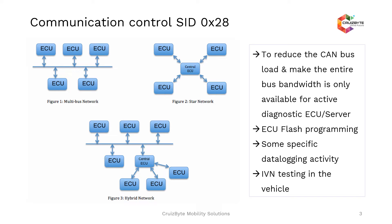Or if you are performing in-vehicle networking testing and want to observe a particular ECU or specific issues in the network, this could be one way of enabling or disabling communication of a particular node — for a full communication stop or enable, or a particular message enable or disable.